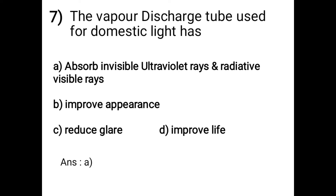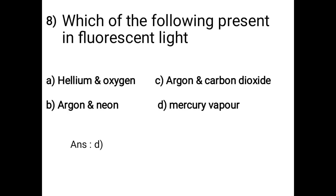Question 7: The vapor discharge tube used for domestic light has: A - absorbs invisible ultraviolet rays and radioactive visible rays, B - improve appearance, C - reduce glare, D - improve life. The answer is option A: the vapor discharge tube used for domestic light absorbs invisible ultraviolet rays and radioactive visible rays.